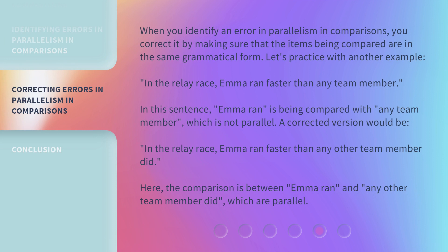When you identify an error in parallelism in comparisons, you correct it by making sure that the items being compared are in the same grammatical form. Let's practice with another example: 'In the relay race, Emma ran faster than any team member.' In this sentence, 'Emma ran' is being compared with 'any team member,' which is not parallel. A corrected version would be: 'In the relay race, Emma ran faster than any other team member did.' Here, the comparison is between 'Emma ran' and 'any other team member did,' which are parallel.